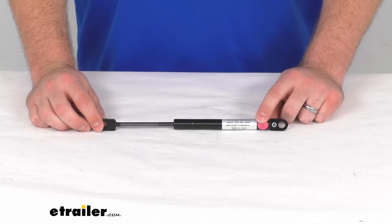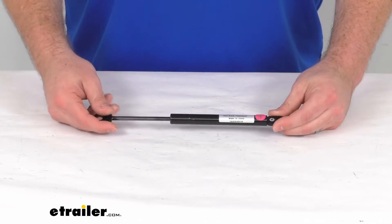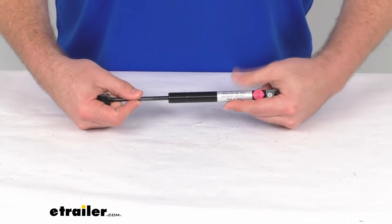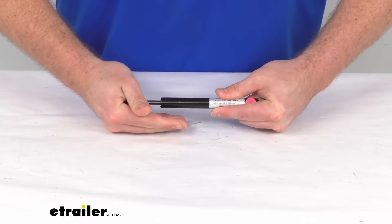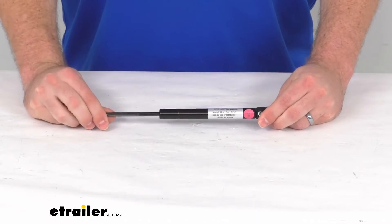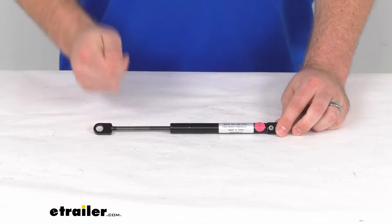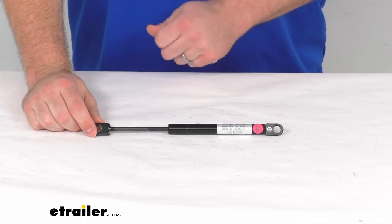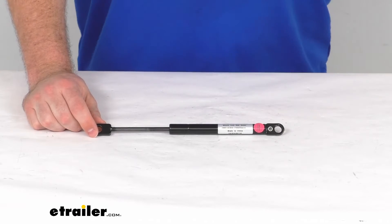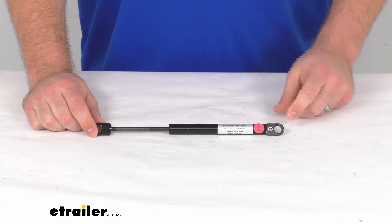This does have a 20 pound compression force, so while I can push it in slightly, it is pretty difficult. So it is going to do a good job of ensuring that your boat hatch is not going to slam shut on you, and it will give you a little bit of extra help as you're lifting that hatch up.